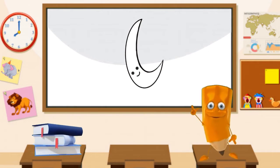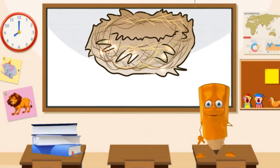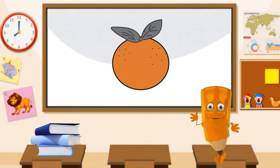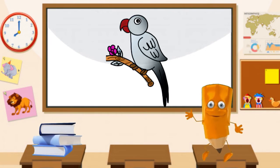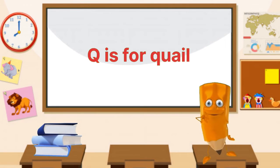N is for nest. O is for orange. B is for banana. Q is for queen.